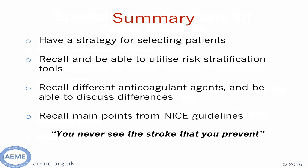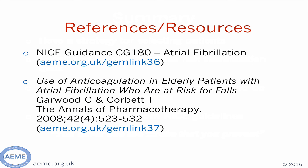Hopefully after this you will have a strategy for selecting patients for anticoagulation therapy, be able to find and use the risk stratification tools available, recall the different anticoagulation agents, and know the NICE guidelines and how to access them. One last thing to note is that we often see the complications of anticoagulation therapy such as intracranial bleeds and GI bleeds, but we don't see the patient who is therapeutically anticoagulated with warfarin or a NOAC, living independently and stroke-free in the community. Thank you for listening — please access the NICE guidelines and the resources available on the last slide.